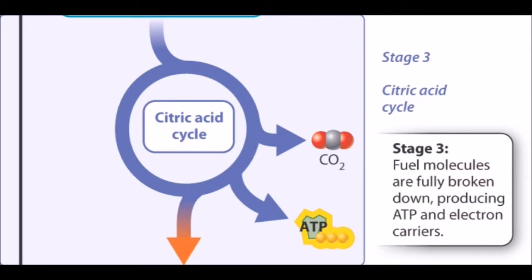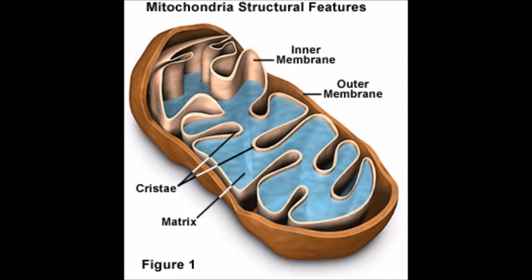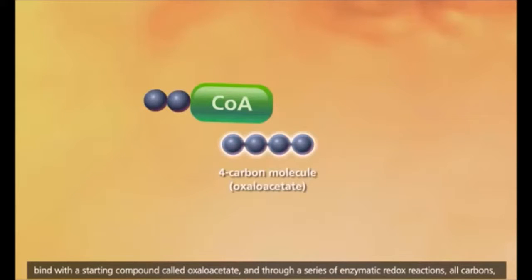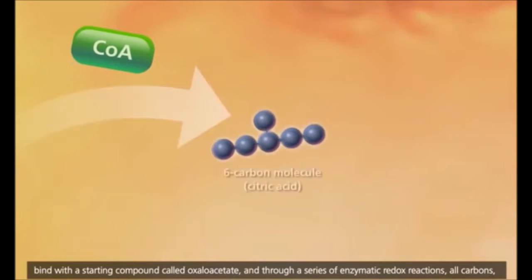The next stage in cellular respiration is the citric acid cycle, also known as the Krebs cycle. This takes place in the mitochondrial matrix and is made up of eight reactions. It is called a cycle because the starting molecule regenerates at the end. To start the cycle, acetyl-CoA binds with oxaloacetate to form citrate. H2O is released in the process.